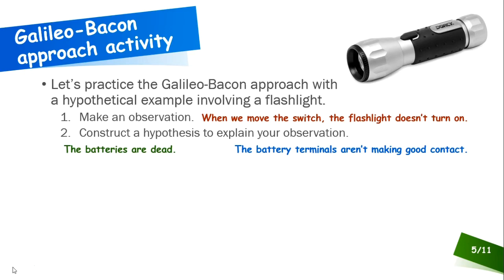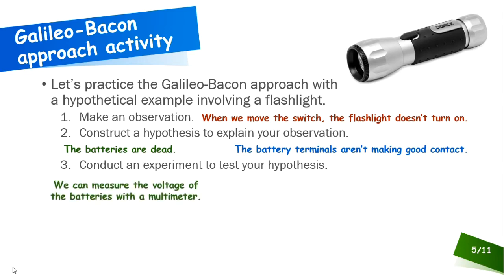It doesn't matter whether you're right or wrong at the beginning. It's about going through the process and letting experience rule the day. So regardless of which of these explanations you have, you can proceed through the rest of the Galileo-Bacon approach. The next step is to conduct an experiment to test your hypothesis. Well, if your hypothesis is that the batteries are dead, you could hook them up to a multimeter and see how much voltage we have. What's the potential difference in the batteries? Is there enough juice left in the batteries, or are they truly dead? That's a legitimate experiment to see if that hypothesis is actually true.